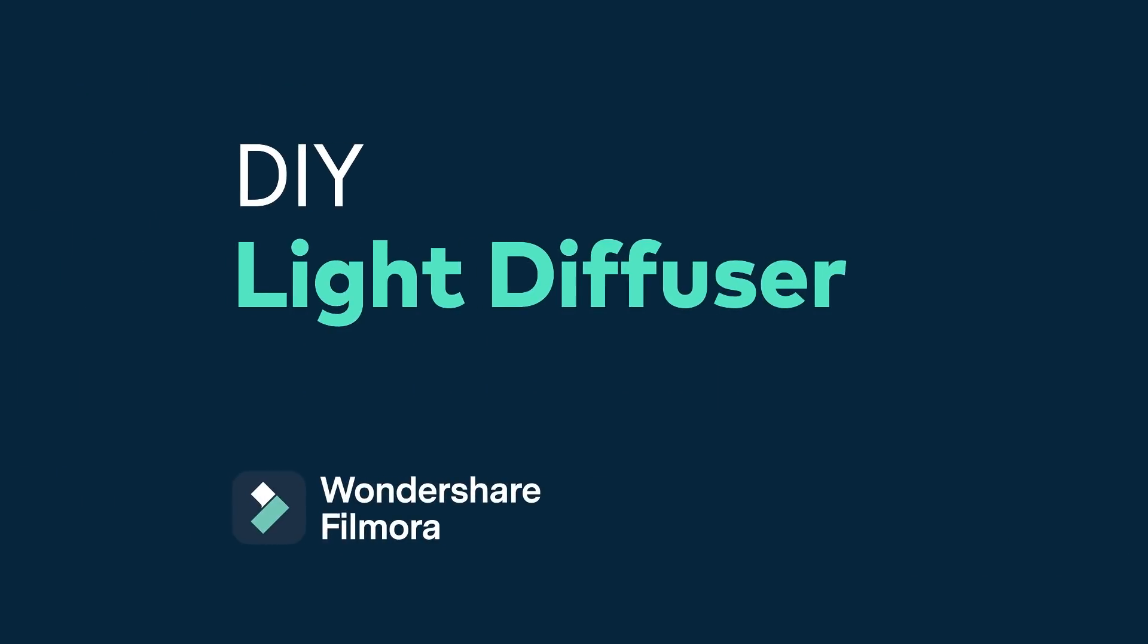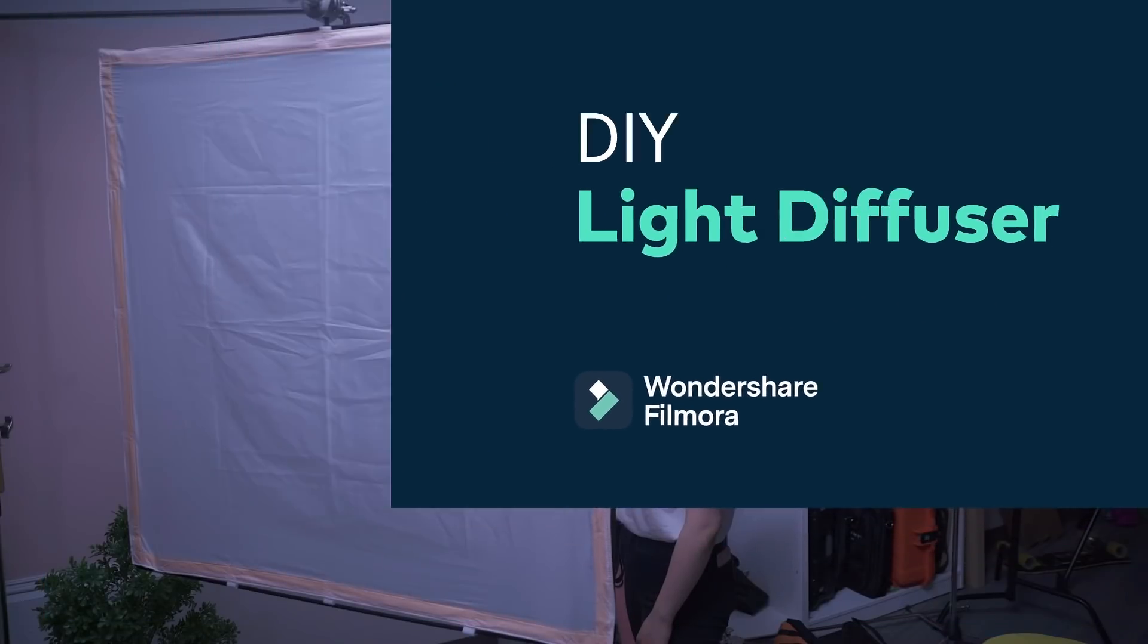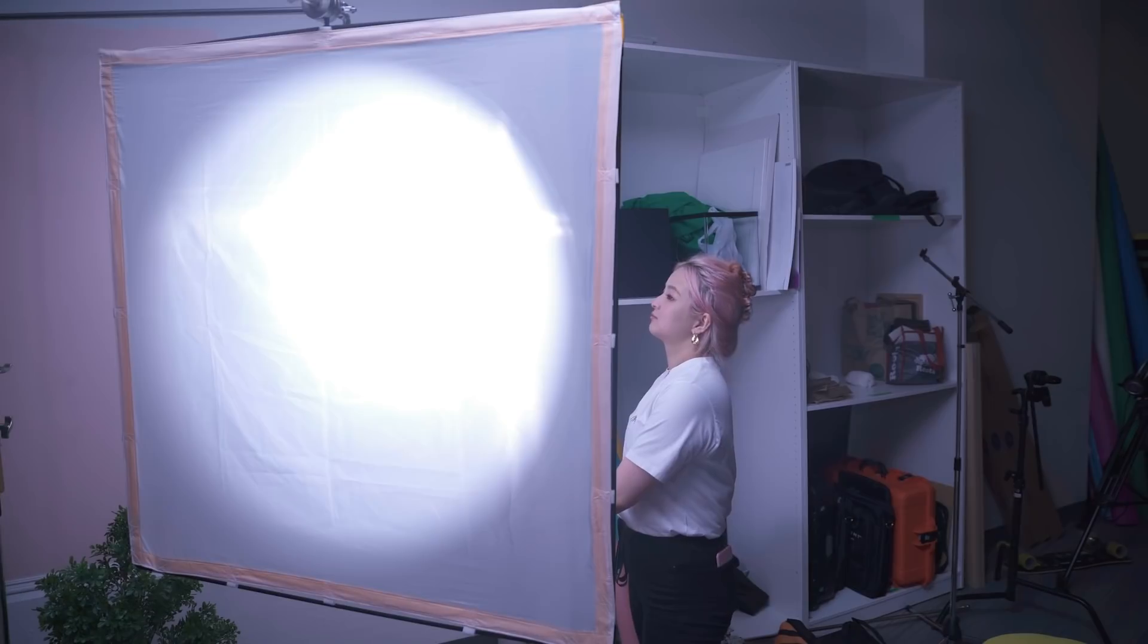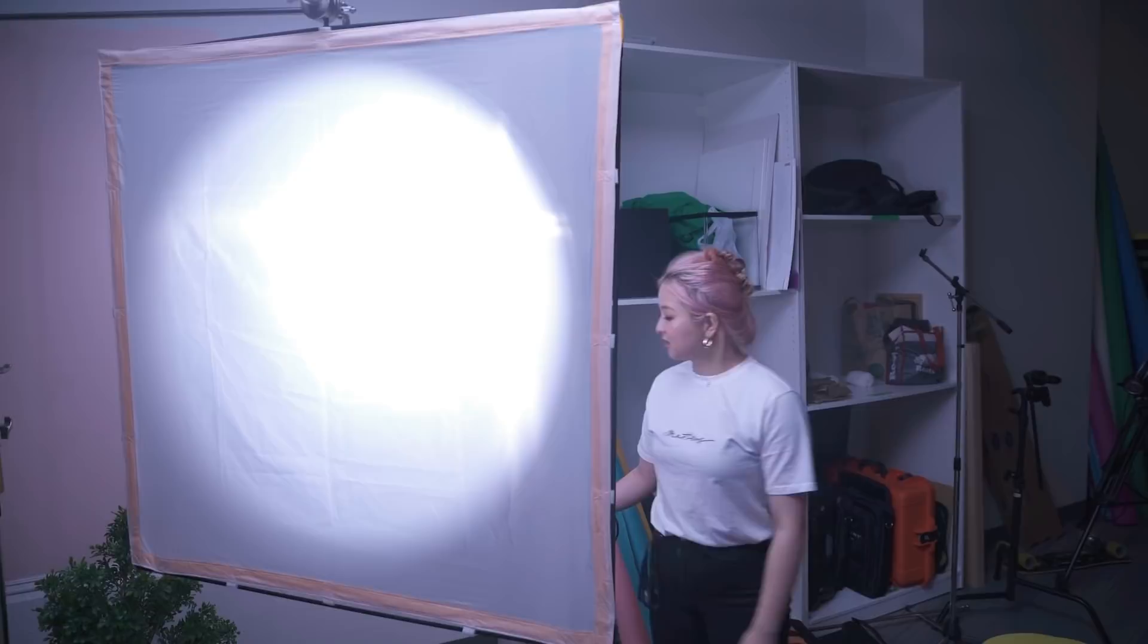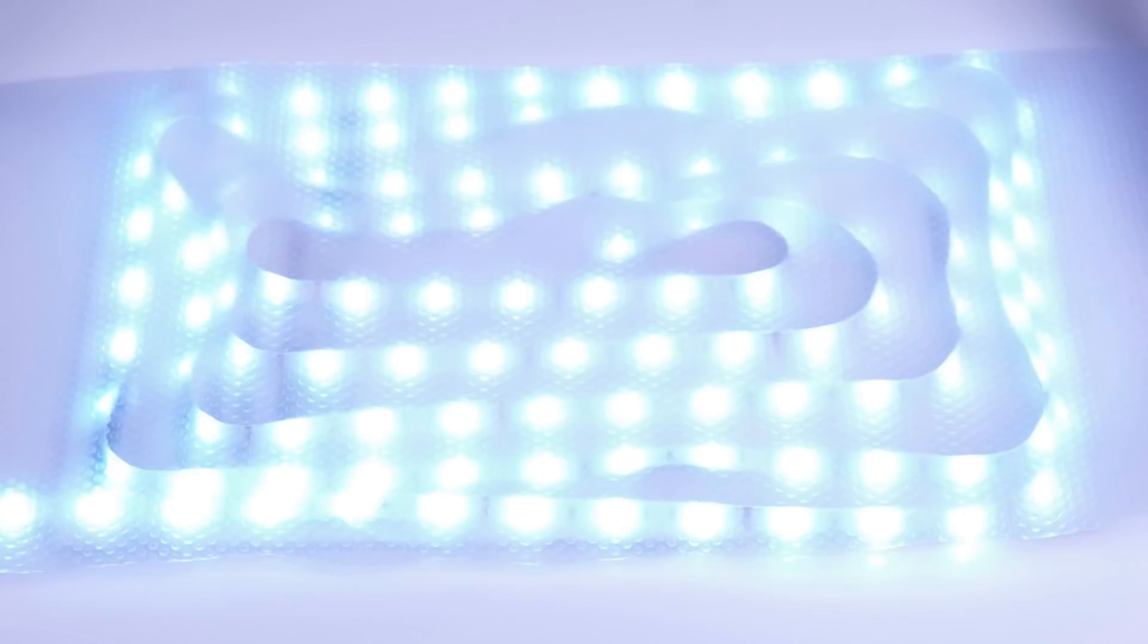And you can diffuse it using a transparent desk mat. Light diffusers are used often on professional sets to reduce harsh shadows and create even and soft lighting. I'm going to use this transparent desk mat, which you can find at any household store, as an alternative to a diffuser and cover the LED panel directly to soften the light. How does it look?